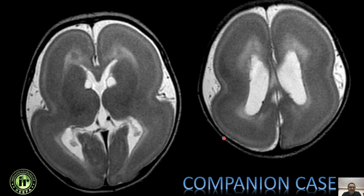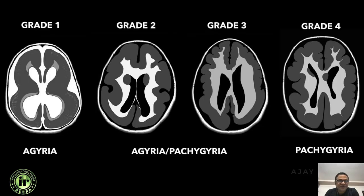These findings translate consistently every time you see grade 1 or complete classic lissencephaly. One of our residents, Dr. Rajay, was asked to draw this illustration and has done an excellent job showing the classic lissencephaly with multiple appreciable layers, periventricular white matter, ventriculomegaly, and smooth brain.